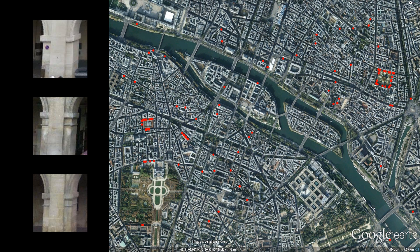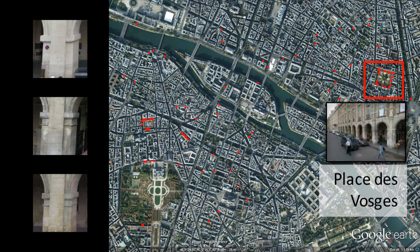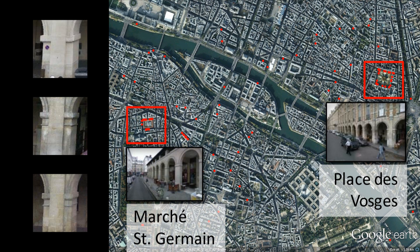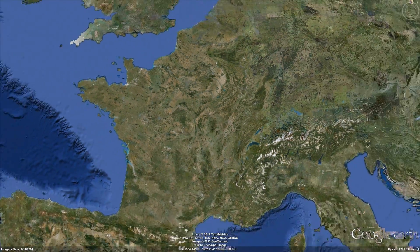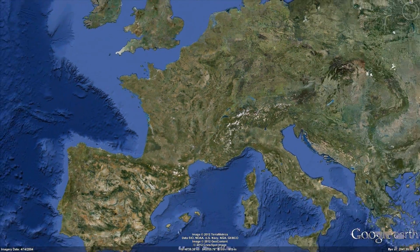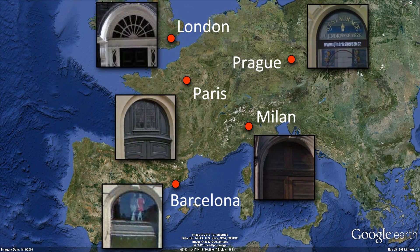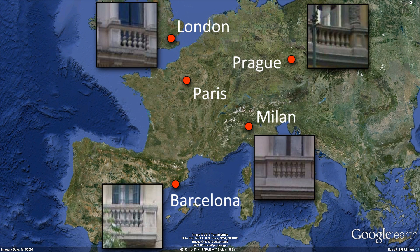This style of column appears in the famous Place de Vosges, yet also in the more recent Marseille Saint-Germain. This might indicate a so-called architectural citation between the two buildings. We can also take a wider view and find elements shared across all of Europe. At the level of continents, architectural similarities may point to cultural interactions.